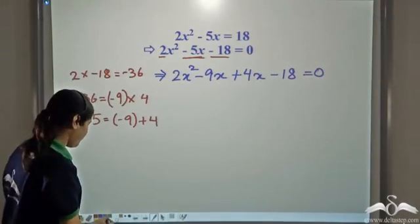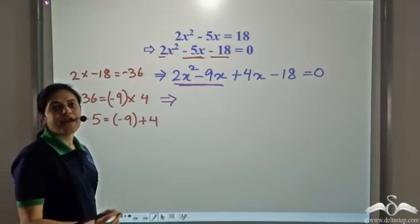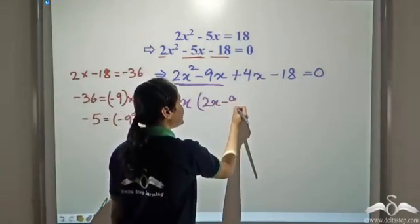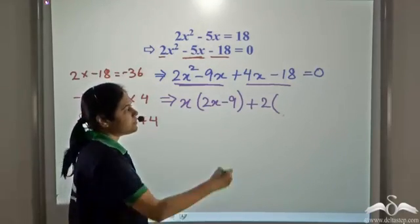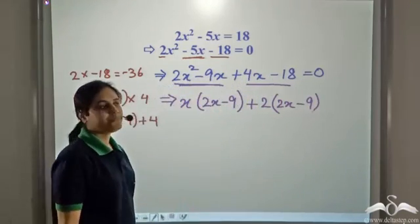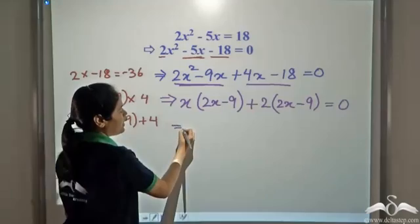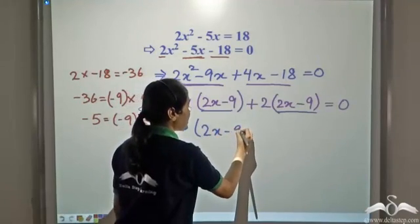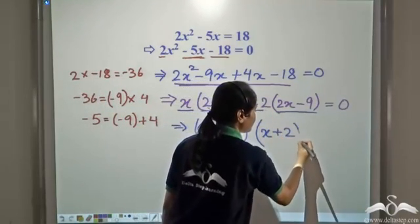From the first two terms, we have x common, giving x times 2x minus 9. From the next two terms, we have 2 common — so 2 times 2x minus 9. Note that 2 times 2x is 4x and 2 times 9 is 18. We now have 2x minus 9 appearing in both groups, so we take 2x minus 9 common, giving us 2x minus 9 times x plus 2 equals zero.